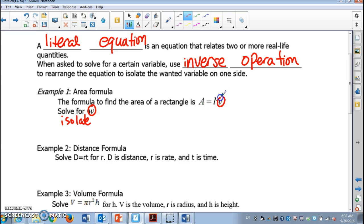A equals L times W. If you want to solve for W, all we need to do is leave W by itself and get rid of L. What operation do you see between L and W? That's right, it's multiplication.